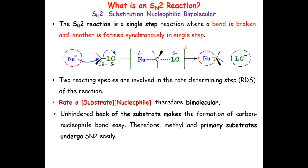SN2 stands for bimolecular nucleophilic substitution. S stands for substitution, N stands for nucleophilic, and 2 stands for bimolecular. This is a one-step reaction in which the bond between the leaving group and the carbon atom is partially broken while the nucleophile starts attacking the carbon atom, giving a transition state which immediately breaks down to give a product where the leaving group is replaced by the nucleophile. All these things happen in a single step.